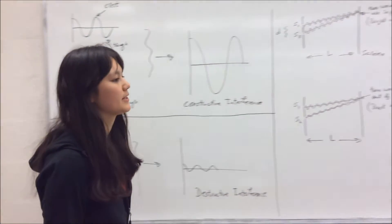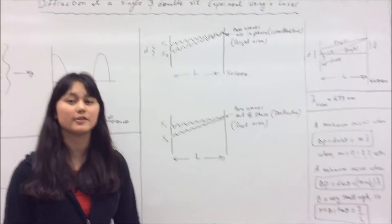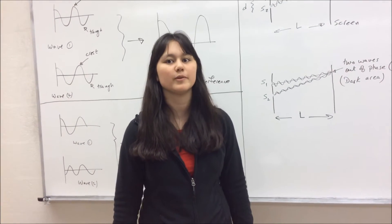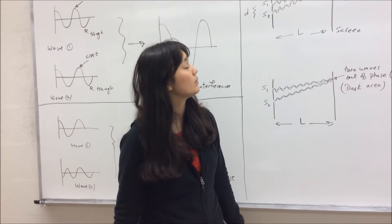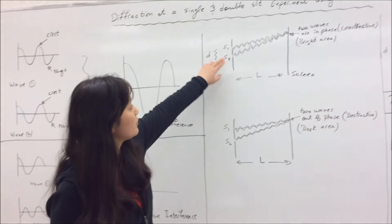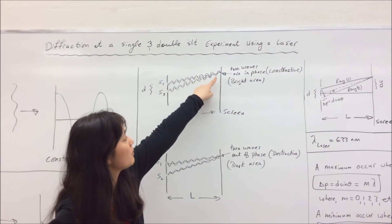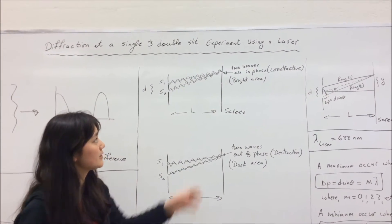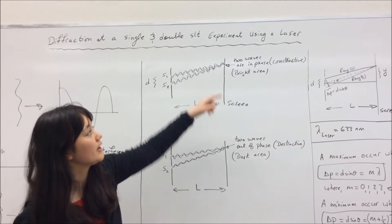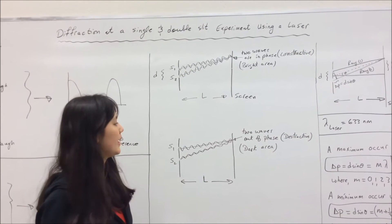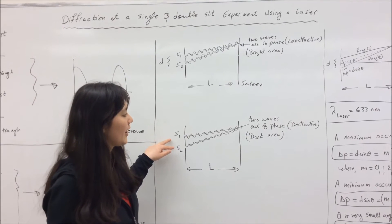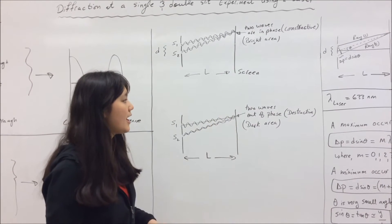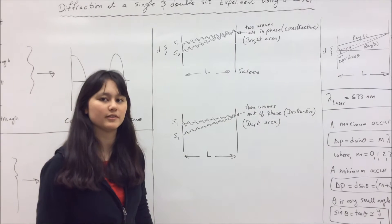This experiment is divided into two parts. In the first part we'll look at single slit diffraction, but right now I'm going to talk about double slit diffraction. When two waves meet at a point on the screen and they are in phase, they produce a bright area due to constructive interference. When the two waves are out of phase, you see a dark area on the screen, which is destructive interference.